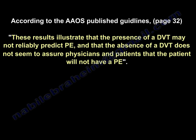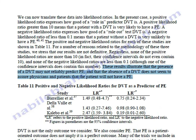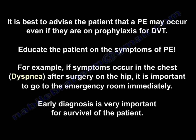According to the American Academy of Orthopedic Surgeons published guidelines, these results illustrate that the presence of a DVT may not reliably predict PE, and the absence of DVT does not assure physicians or patients that a PE will not occur. Therefore, the best approach is to advise the patient that they may develop a PE even while on prophylaxis for DVT, and to educate the patient on the symptoms of PE.